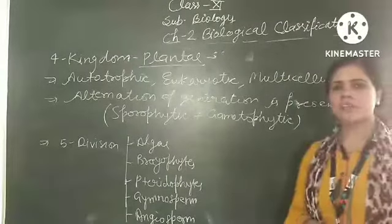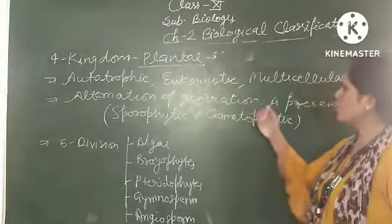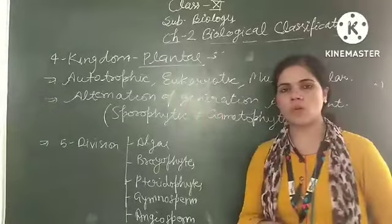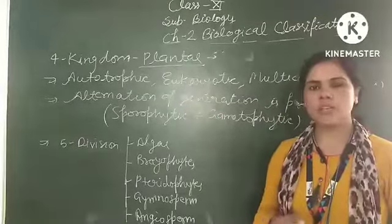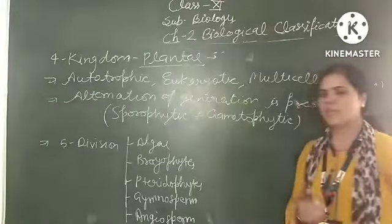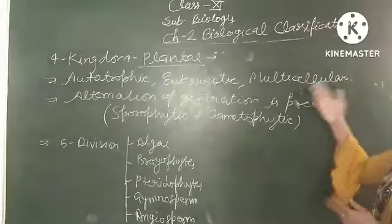This is our fifth kingdom, kingdom Plantae. General features of kingdom Plantae: these are autotrophic in nature, eukaryotic and multicellular organisms. They do photosynthesis because of the presence of photosynthetic pigment, that is chlorophyll, inside the chloroplast. Eukaryotic cells are present. Multicellular.